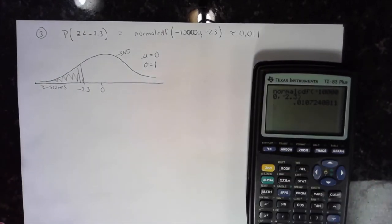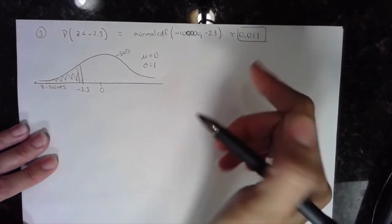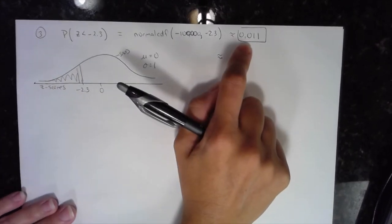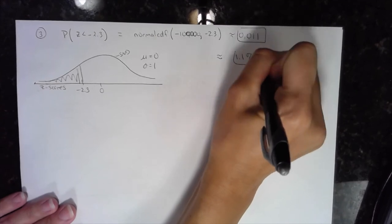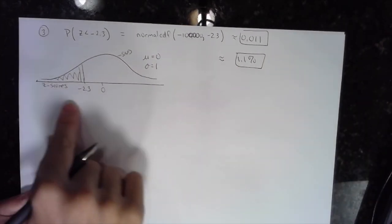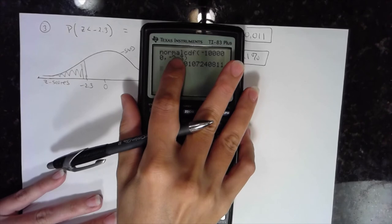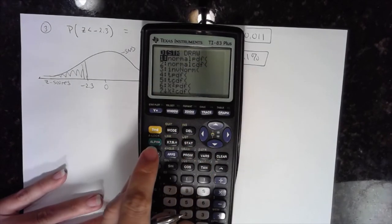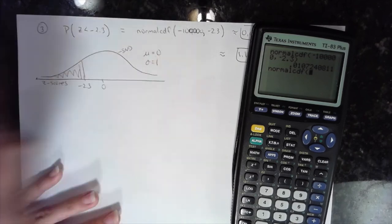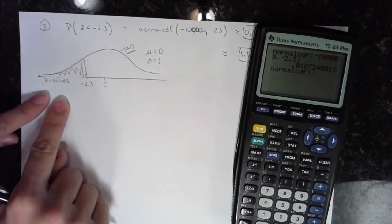So the area of the shaded region is 0.011, or the probability that I randomly choose a z-score and it's less than negative 2.3 is 0.011, or 1.1% in percentage form. Any time you're looking for area under an SND curve — which is the same as probability of z-scores — use normalcdf under distribution (2nd, VARS, number 2). Lower bound, upper bound. If it's a z-score, the mean is 0 and the standard deviation is 1.